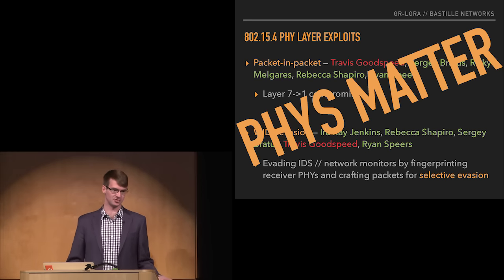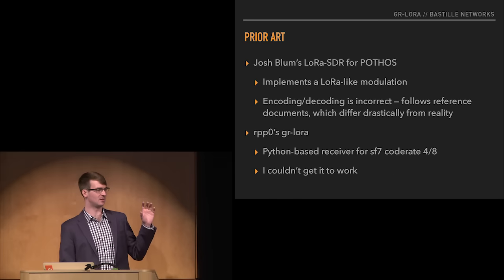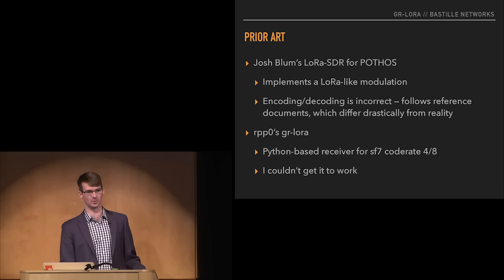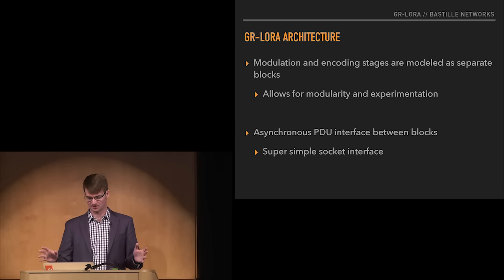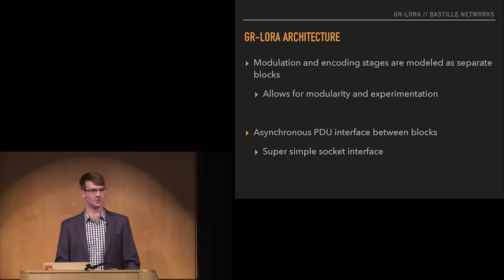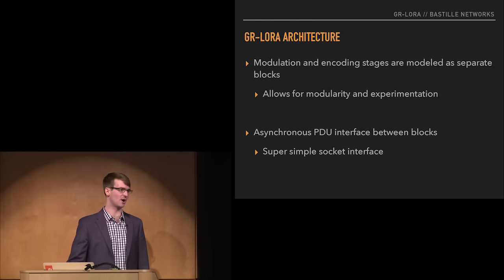That's why we're releasing this out-of-tree module. Some prior art to cite: Josh Bloom has a LoRa SDR module for Pothos that implements LoRa-like modulation but gets the encoding and decoding wrong — the modulation is really good, but the encoding was taken from documentation which does not agree with what's in the hardware. Also, RPP0 on GitHub has a GR LoRa with a Python-based receiver that I haven't had great results with — I'm going to try to sync up and maybe combine forces. The architecture models modulation, coding, DMOD, and decoding as separate blocks for modularity, inspired by how GR IEEE 802.15.4 does it, with an asynchronous PDU interface you can write to via sockets.